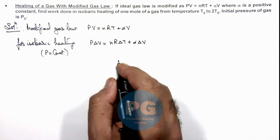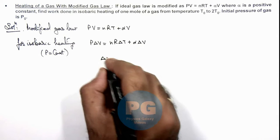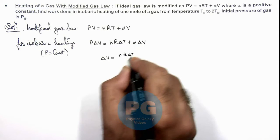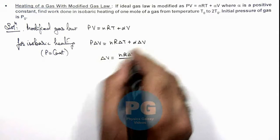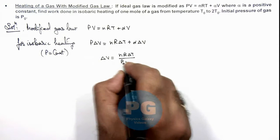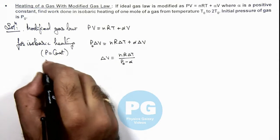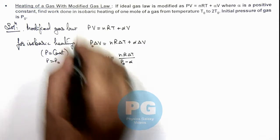Now from this relation we get the value of ∆V = nR∆T divided by (P₀ - α). Here I can take the pressure at P₀ because this constant pressure is P₀ which is given in the problem.